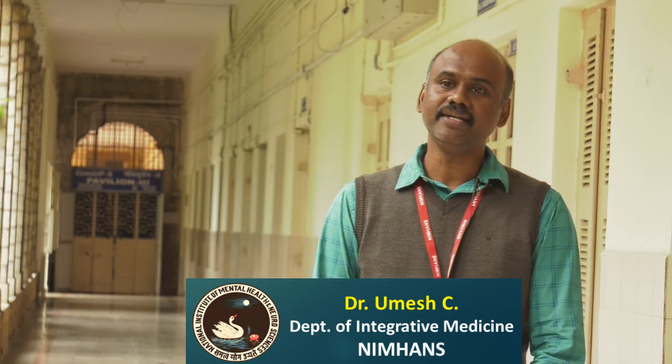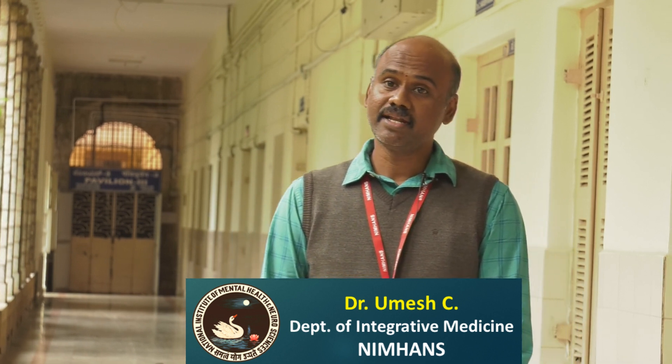In Ayurveda, there are three doshas: Vata, Pitta, and Kapha. Vata is given prime importance because it is the one which physiologically governs neurological functions. All the neurological disorders have been explained in Ayurveda under the spectrum of Vata Vyadi and also under the spectrum of Marma Gata, where three Marmas have been identified.